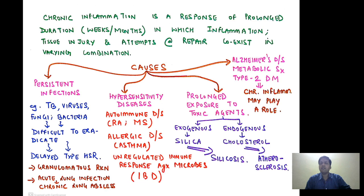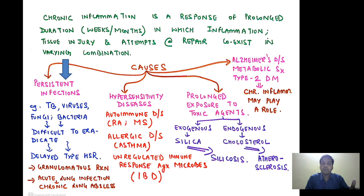There are several causes for chronic inflammation. Number one, we are having any kind of persistent infection, for example tuberculosis or some kinds of viruses, fungi, and bacterial infections. Such infections are quite difficult to eradicate and will give rise to a delayed type of hypersensitivity reaction, ultimately a granuloma or granulomatous reaction. Often after an acute lung infection that persists for a very long time, it can give rise to a chronic lung abscess.